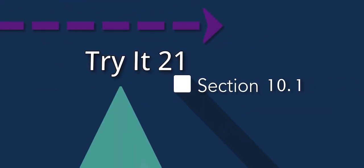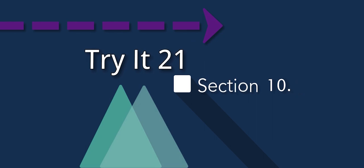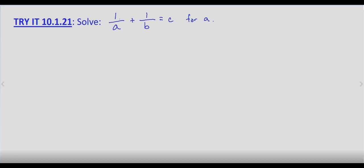So again, solving rational equations for a specific variable. The process is the same. First, will any denominators factor? We have a, and we have b, and we have 1. So none of them will factor.